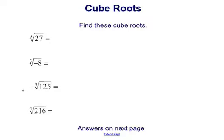We can also have a negative on the outside of the cube root — for example, this asks for the negative cube root of 125. And we can have the cube root of positive numbers as well, such as the cube root of 216. For all of these, we're asking what number to the third equals the number under the cube root. In the third example, we'll have to make our answer negative.